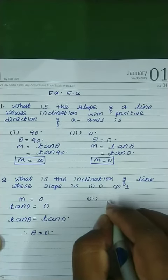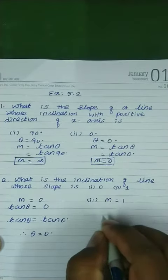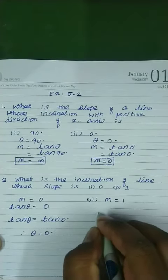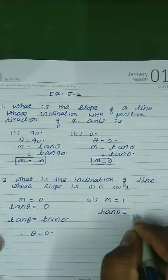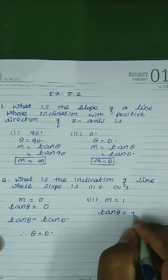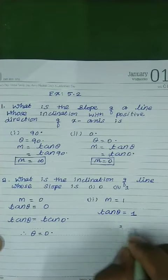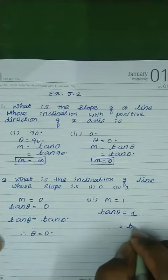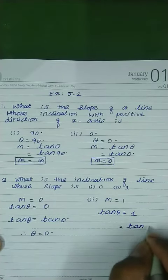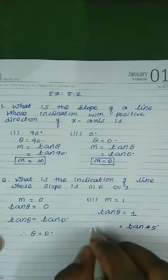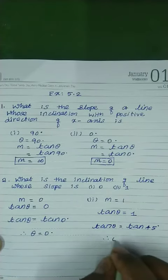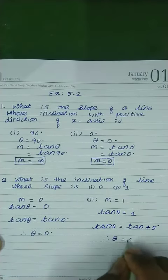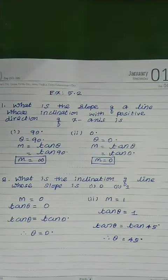Second one. m equal to 1. Slope m equal to tan theta. Therefore, tan theta equal to 1. The value of tan 45 degree is 1. Therefore, theta equal to 45 degree.